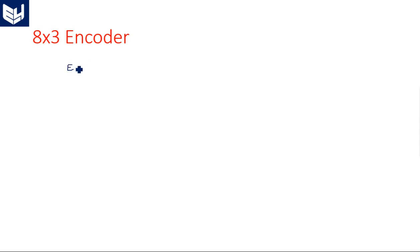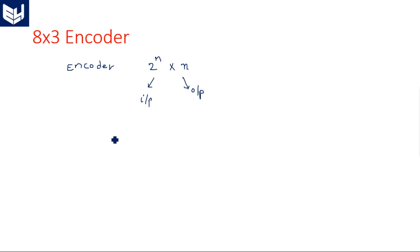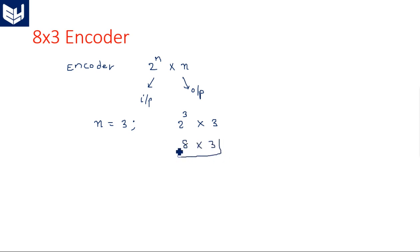The basic size of the encoder is 2 power N input lines by N output lines. For our requirement we are keeping N equal to 3, which gives 2 power 3 by 3 — that is, an 8 by 3 size encoder. This is our concept: the 8 by 3 encoder with N equal to 3.